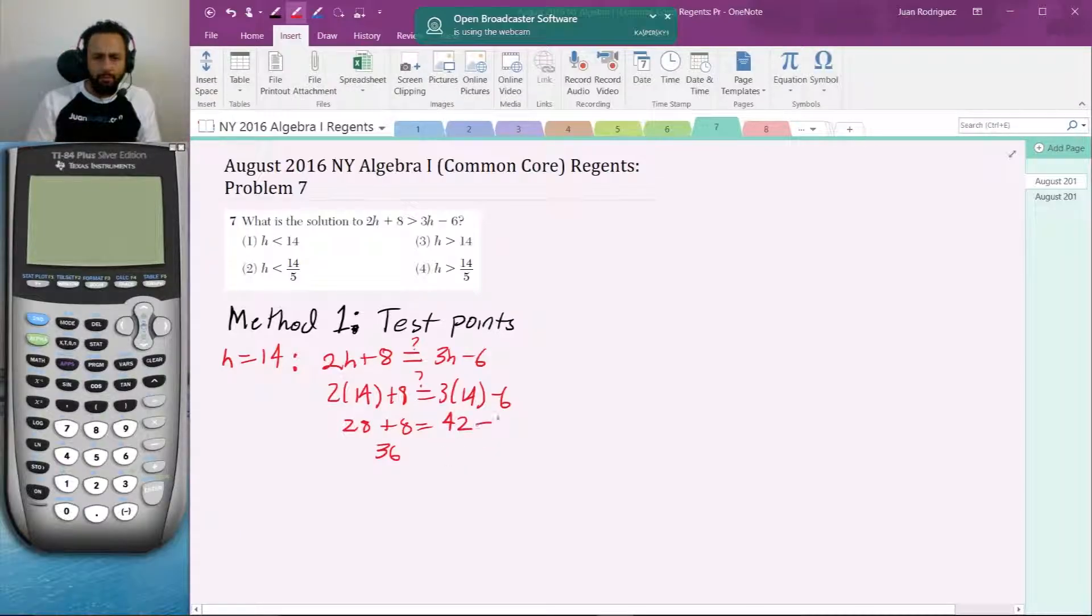42 minus 6 which is equal to 36, so that is true. So if 14 is in fact the correct boundary point, that means that choice 2 is not the answer and choice 4 is not the answer.